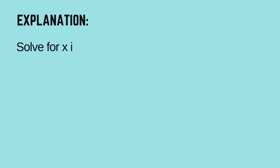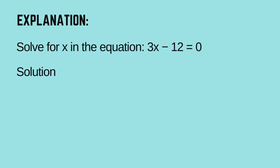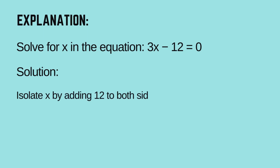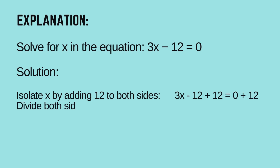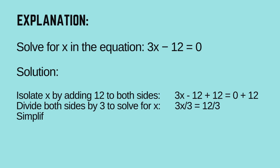Let's learn how. Solve for X in the equation: 3X minus 12 equals 0. Isolate X by adding 12 to both sides: 3X minus 12 plus 12 equals 0 plus 12. Divide both sides by 3 to solve for X: 3X ÷ 3 equals 12 ÷ 3. Simplify the result: X equals 4.